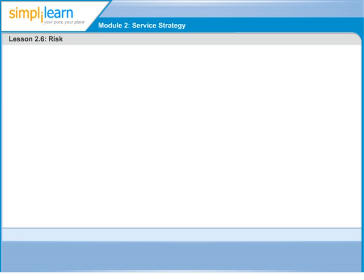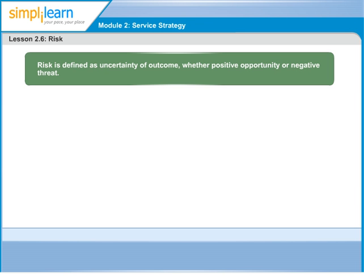The next concept we're going to introduce is risk. Risk is defined as uncertainty that can have positive or negative outcome. If the outcome is positive — that is to say, helpful to the business objectives of the organisation — such risks are called opportunity. Whereas if the outcome is negative, such risks are called threat.